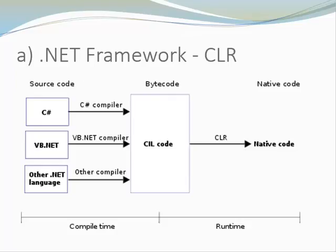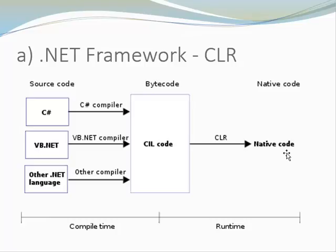Here is an image that shows how software development in the .NET Framework works. You can see how we have different .NET languages. In our case, we are going to use C#. And then we are going to use a C# compiler to translate C# to Common Intermediate Language. This is the counterpart to the Java bytecode. In order to run the Common Intermediate Language on a specific processor, we still need to translate it to native code. Typically, this is done with JIT compilation. JIT stands for just-in-time compilation. It happens during runtime as the contents of an assembly are loaded and executed.